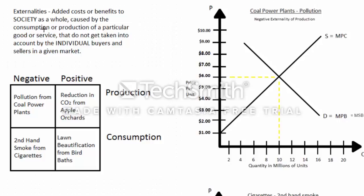Hello, my name is Jordan, and I graduated in 2012 with a degree in economics. I still vividly remember a particular question on one of my exams that dealt with externalities. It tripped me up because I wasn't fully prepared for some of the distinctions between the four different types of externalities that exist. As a quick refresher, an externality is basically just an added cost or benefit to society as a whole that is not taken into account by the individual buyers and sellers in a given market.